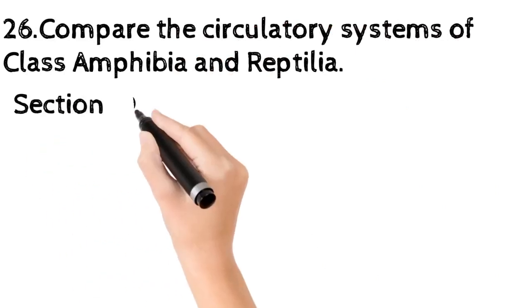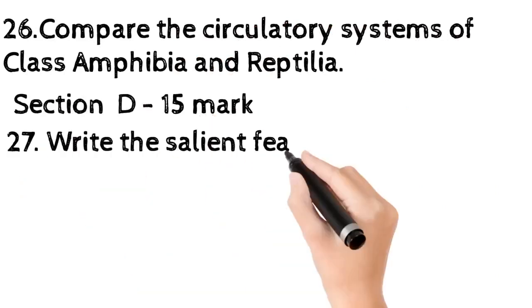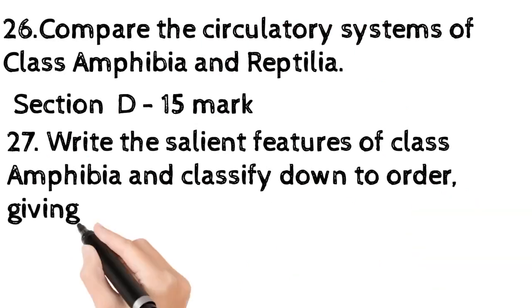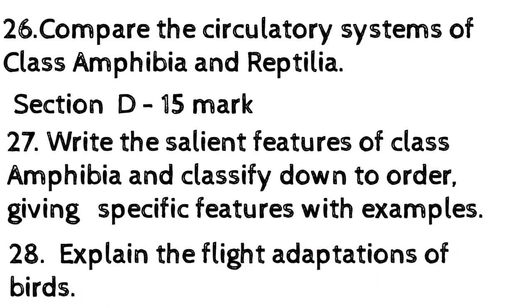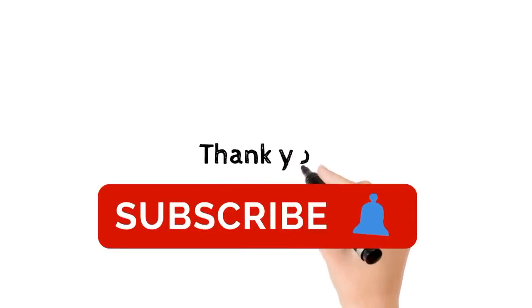Section D, 15 mark. Twenty-seven, write the salient features of class Amphibia and classify down to order giving specific features with examples. Twenty-eight, explain the flight adaptations of birds. More and more questions which can help you improve your revision will be updated soon.